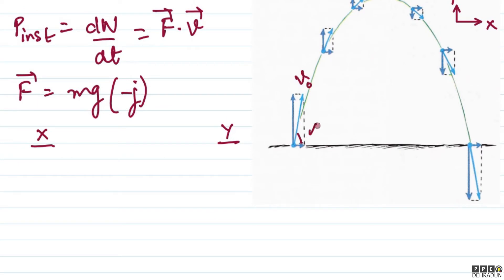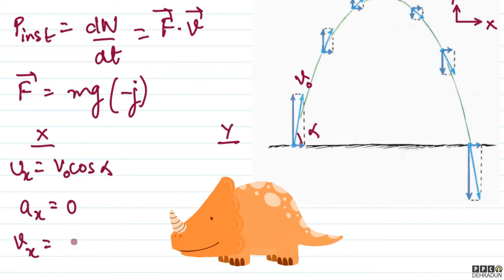So I will write ux equals v-naught cos alpha. The acceleration along the x-axis is zero, so ax equals zero. This means vx at any time t, the x component of velocity, will equal v-naught cos alpha.